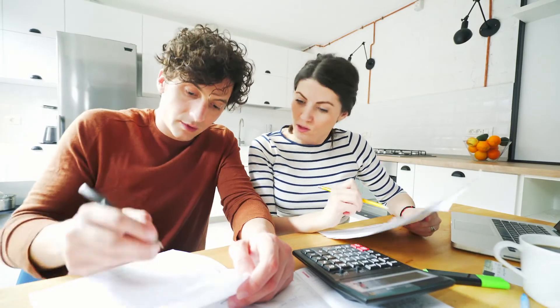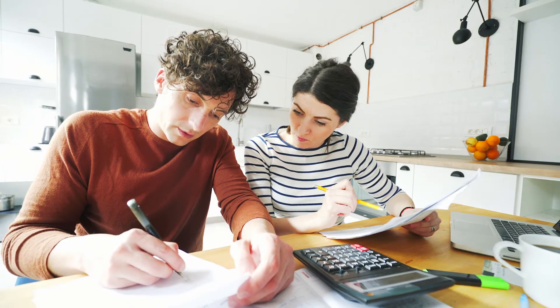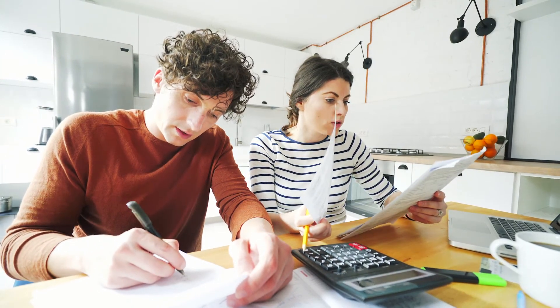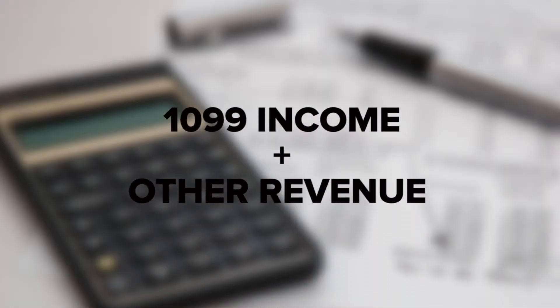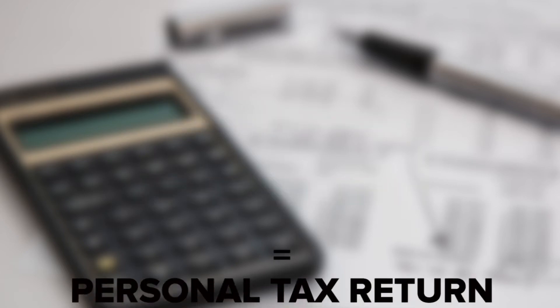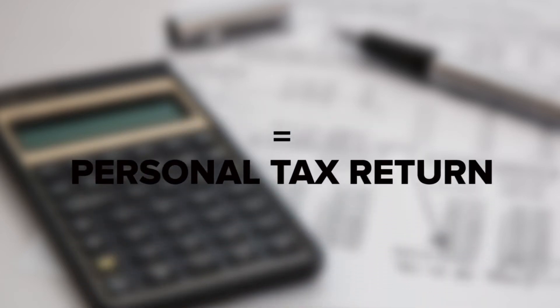Knowing how to file a Form 1099 Miscellaneous depends on whether and how you have incorporated your business. Sole Proprietors: if you're a freelancer, independent contractor, or a single-member LLC, your 1099 income is reported on a Schedule C form. This form is the method of reporting all business income and any business expenses that reduce your profit. Simply add your 1099 income together with all other revenue and put the sum on line 12 of your personal tax return.